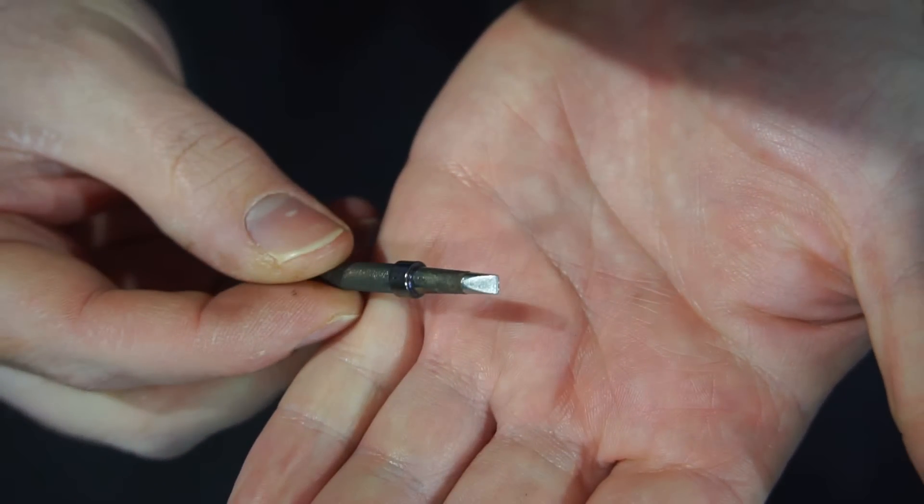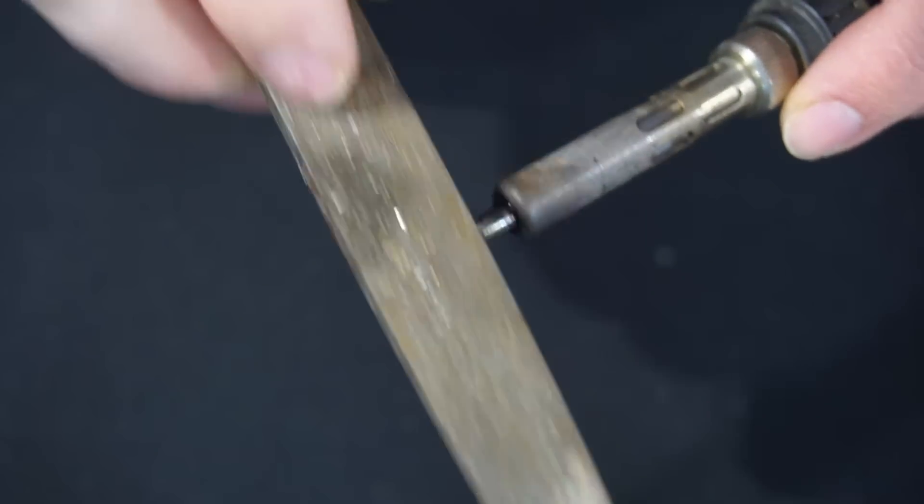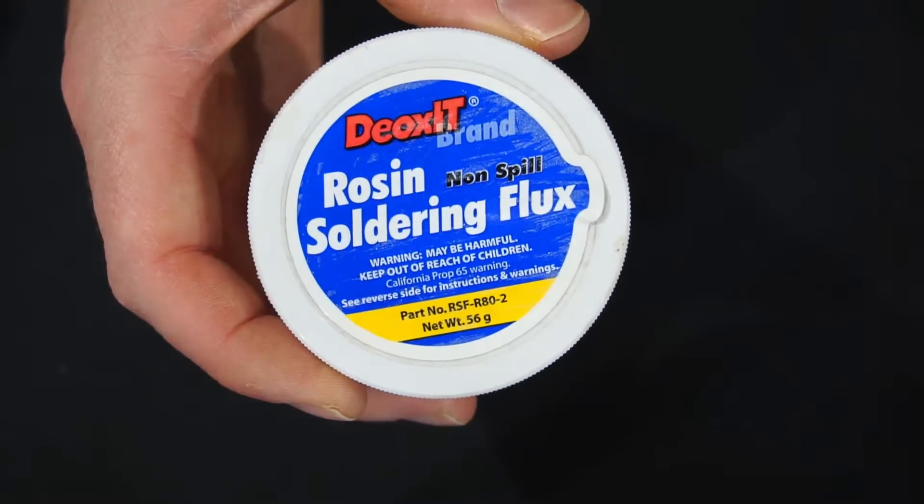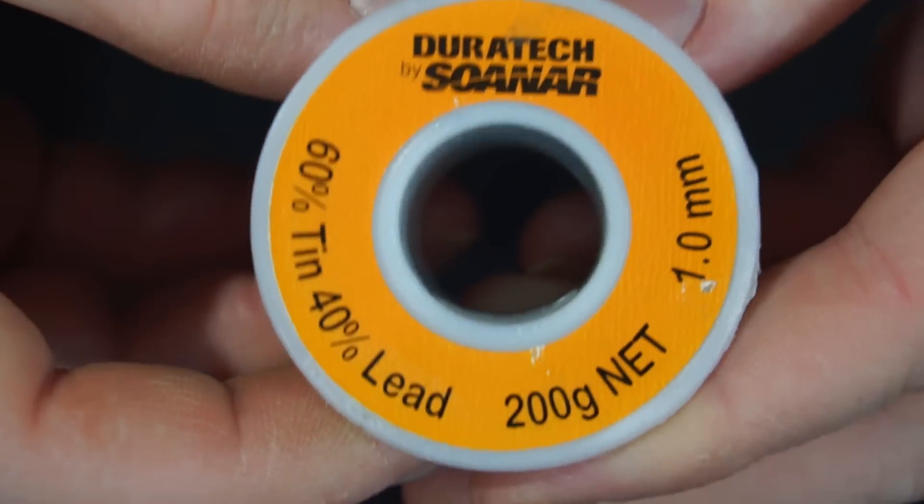Of course that was completely fake. You should avoid using abrasives to clean your iron, including files and sandpaper. To clean your iron the right way, you'll need flux, a damp sponge or brass wool, and some solder, preferably flux core solder.